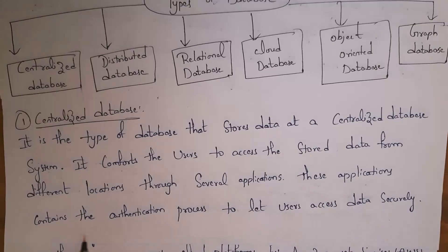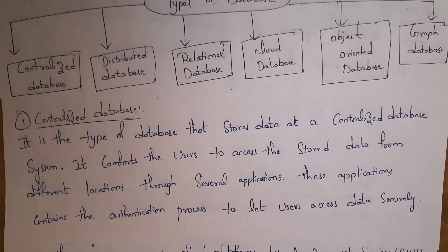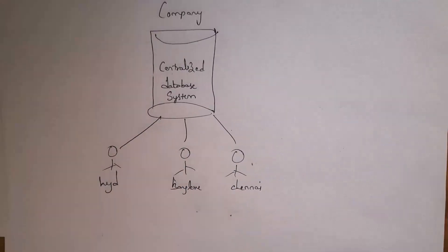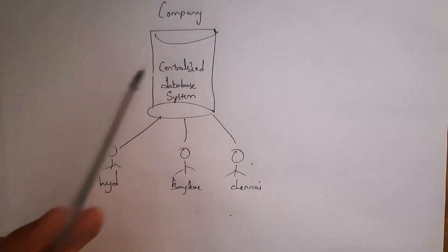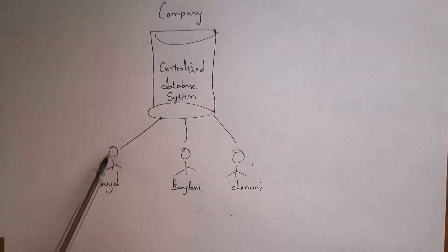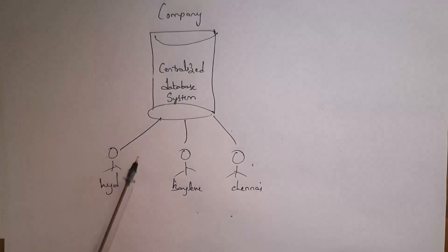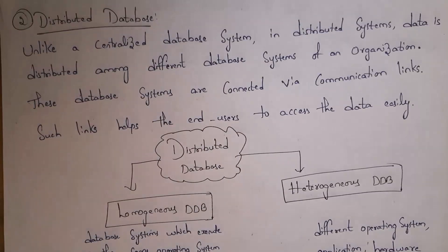These applications contain an authentication process to let users access data securely. Authentication is nothing but a password. For example, if a user wants to access data in the centralized database system, the user must enter a password in their application — only if the password is correct can they access the data.